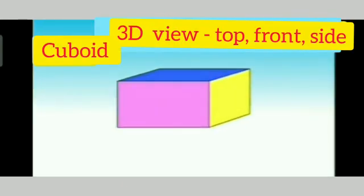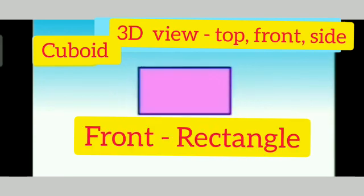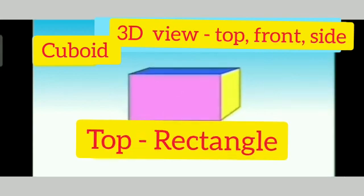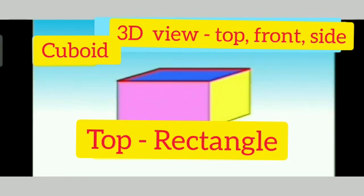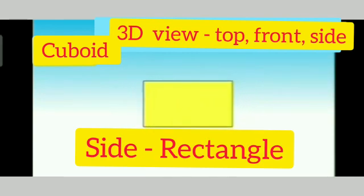Now, let's view the next solid shape that's a cuboid from different angles. First of all, look at the front of the cuboid that's pink in color. It is rectangular in shape. Now, look at the top of the cuboid that's blue in color. It is also rectangular in shape. And now, look at the side of the cuboid that's yellow in color. And it is also rectangular in shape.